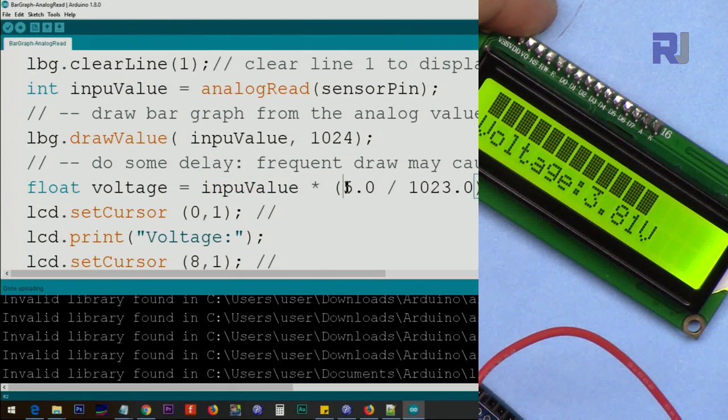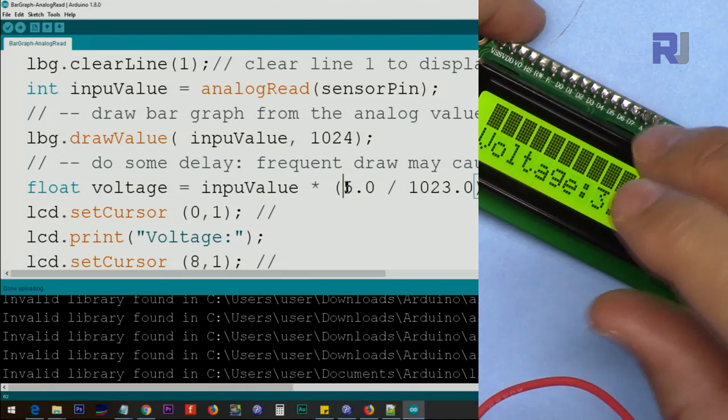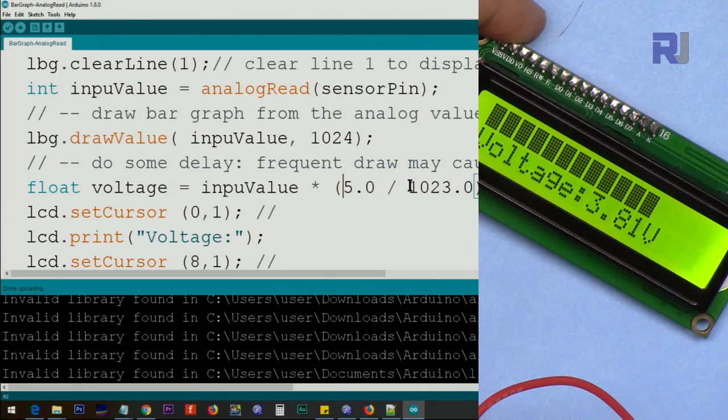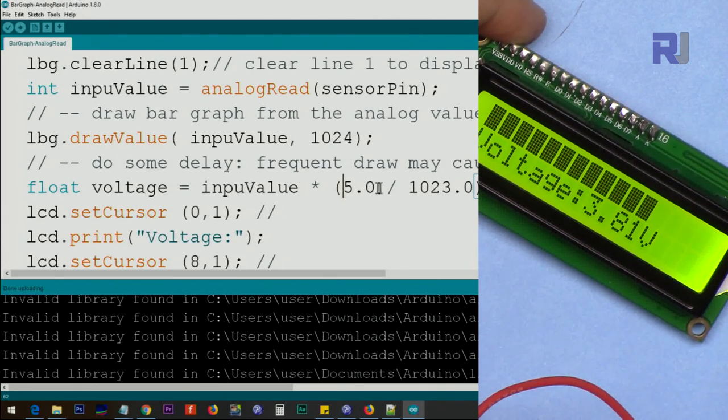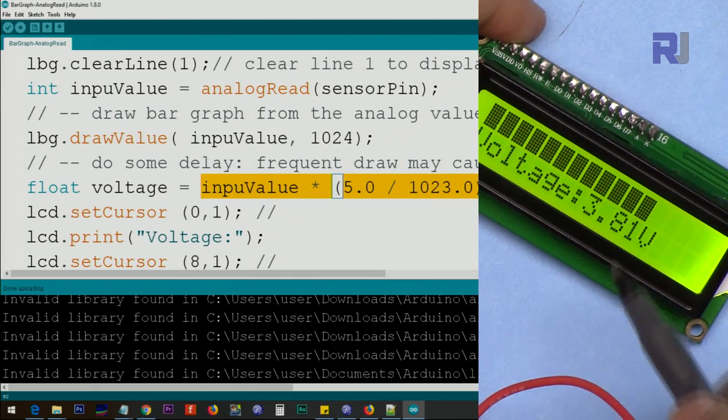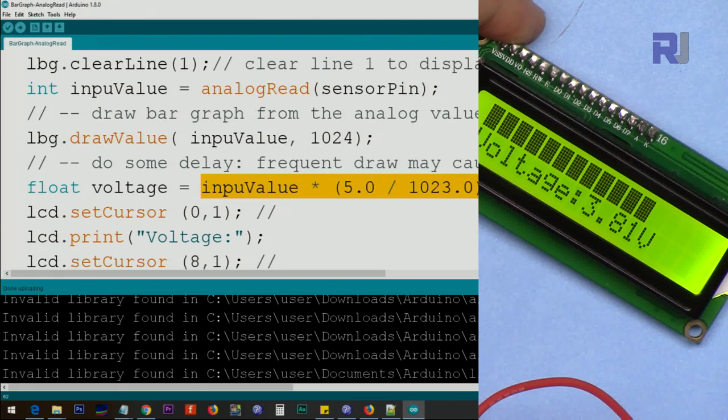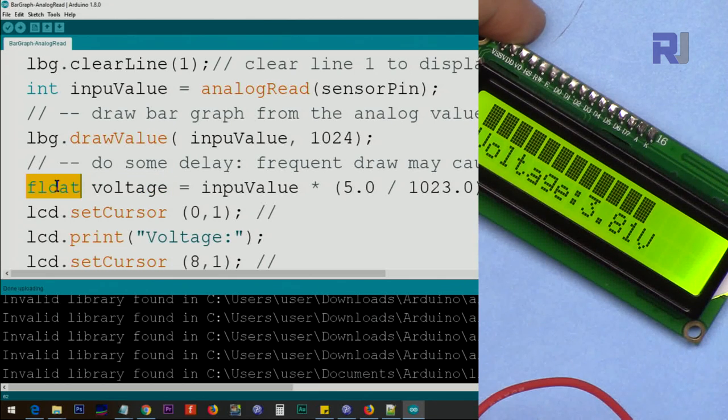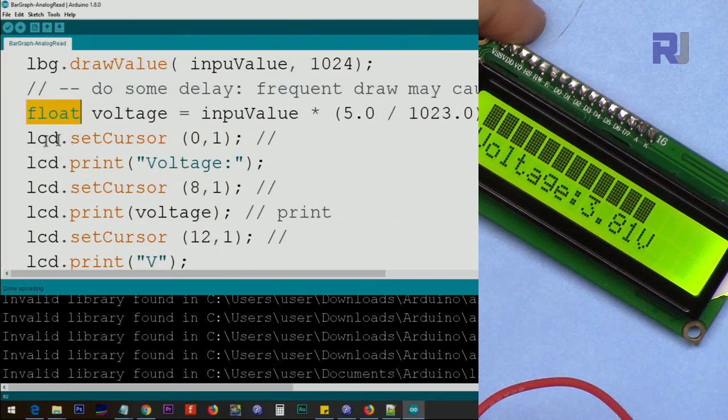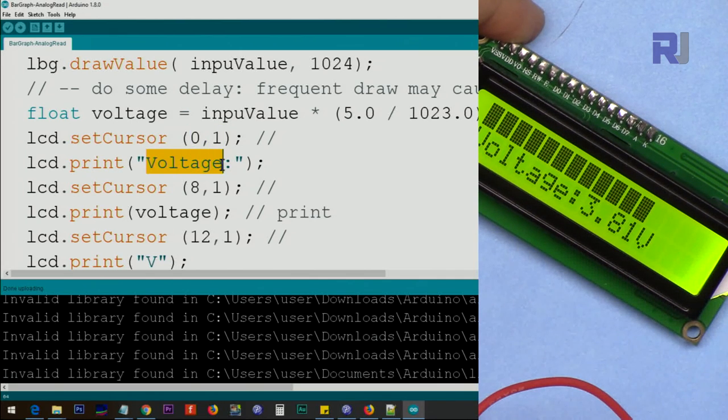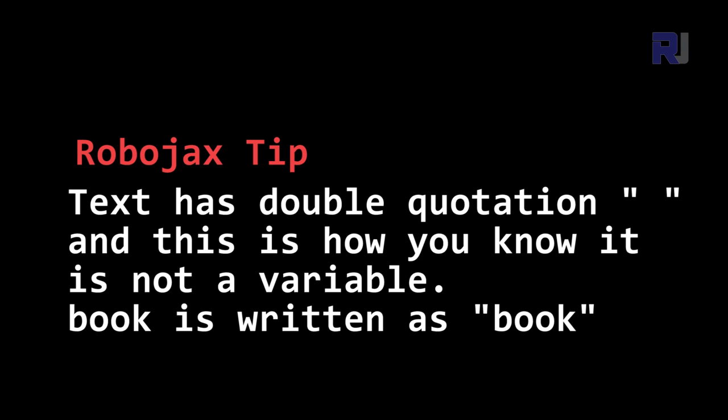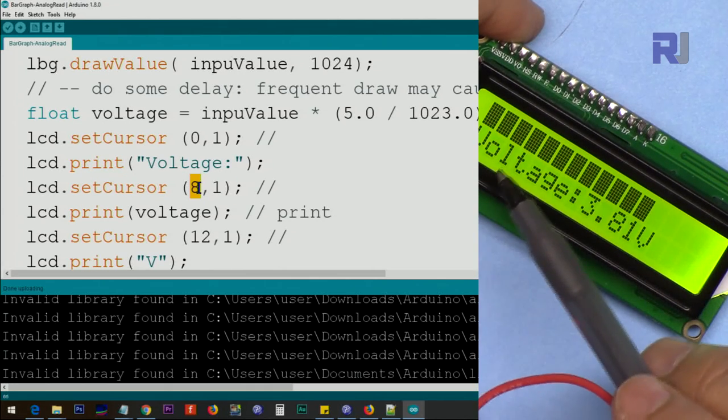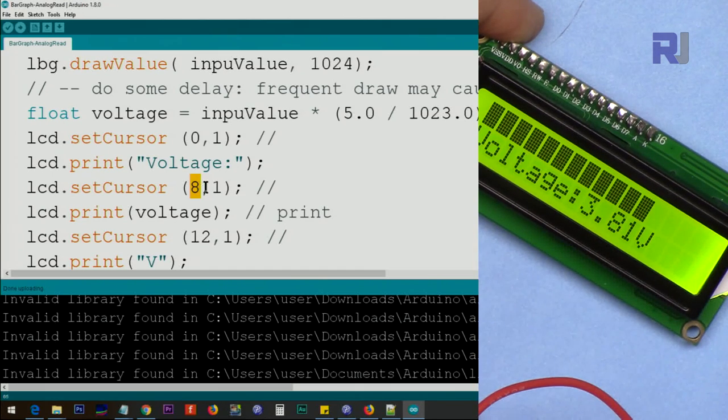Then we get the input value multiplied by five, because the maximum voltage that this can measure is five volts, and number of steps between the five is from zero to 1024, 1023. It's 1024 steps multiplied by this. It will give us actual voltage. The calculated value of this is stored in a variable called voltage of type float. Then we move the cursor by using lcd.setCursor line character 0, line 1. It means put the cursor in here, and then we print the text called voltage.